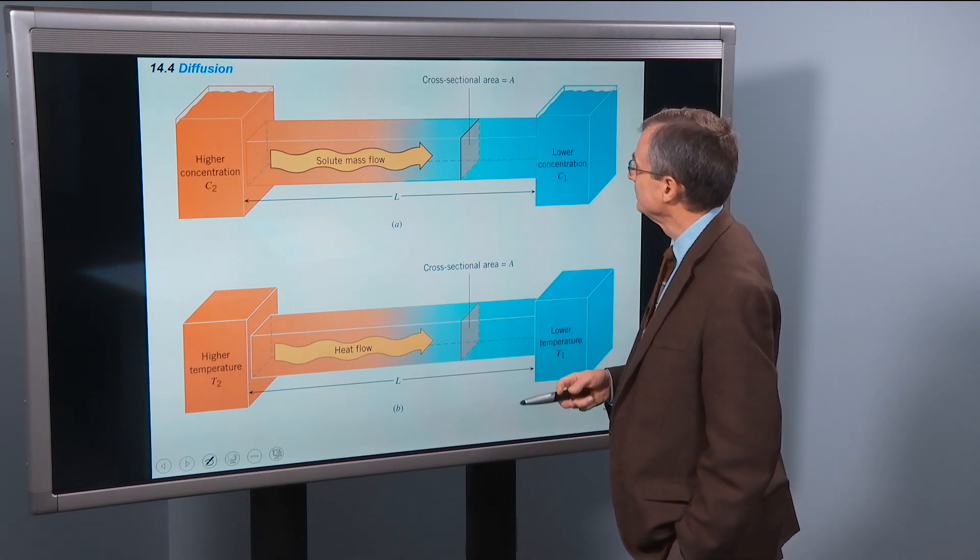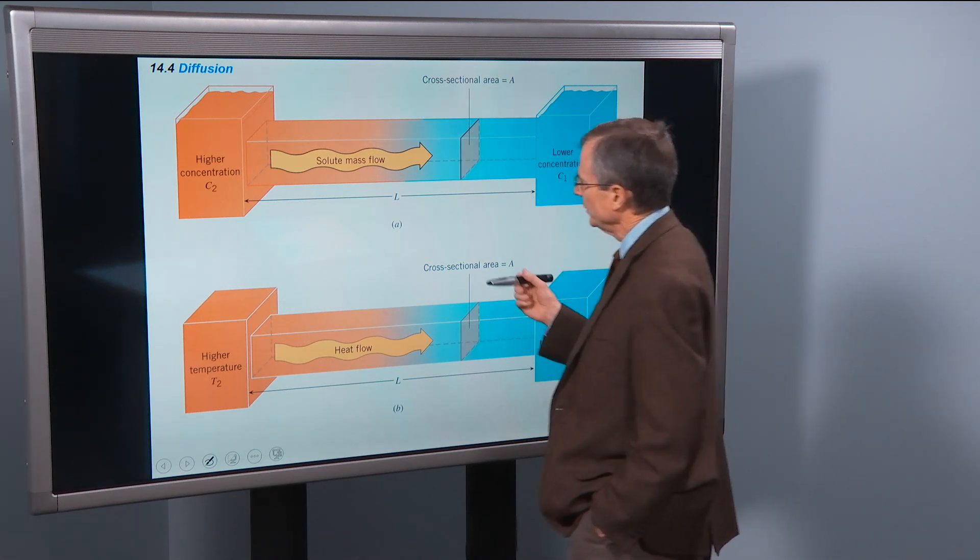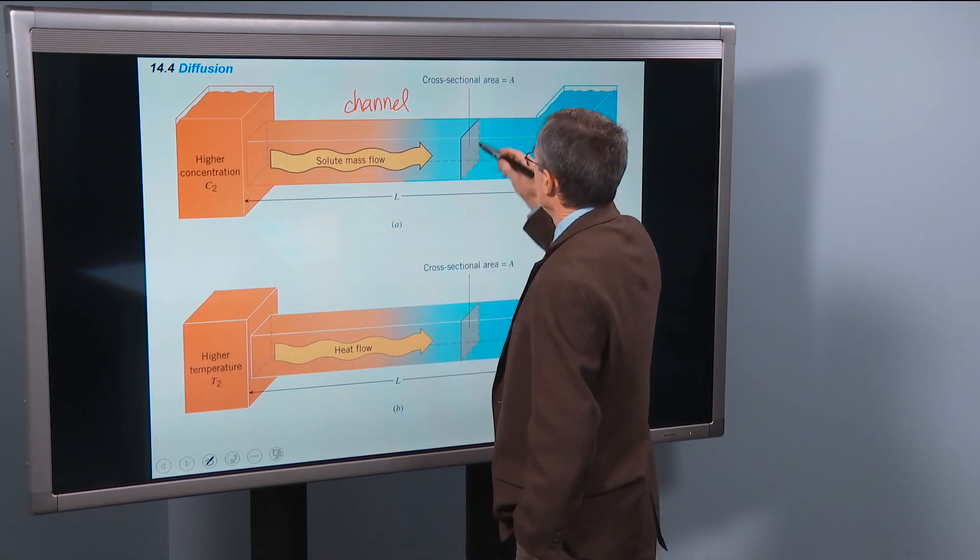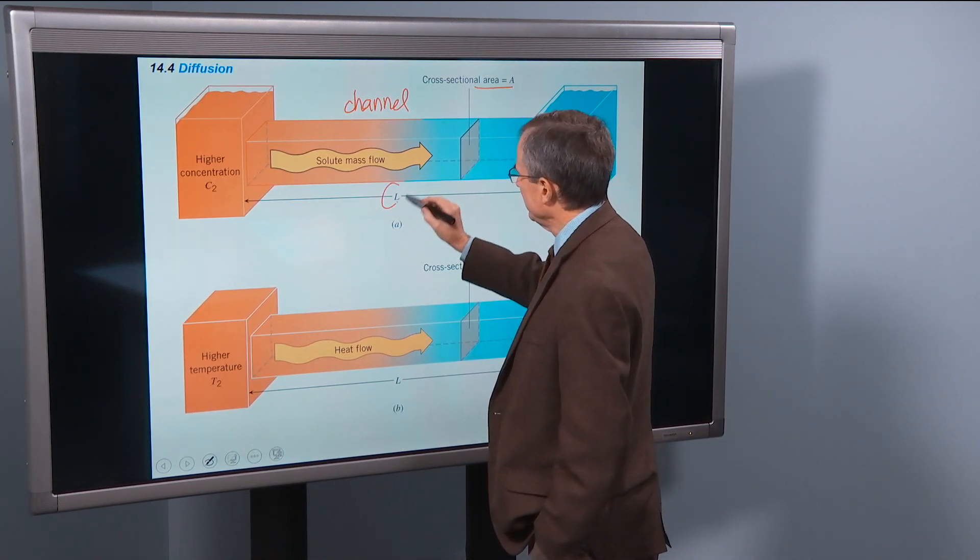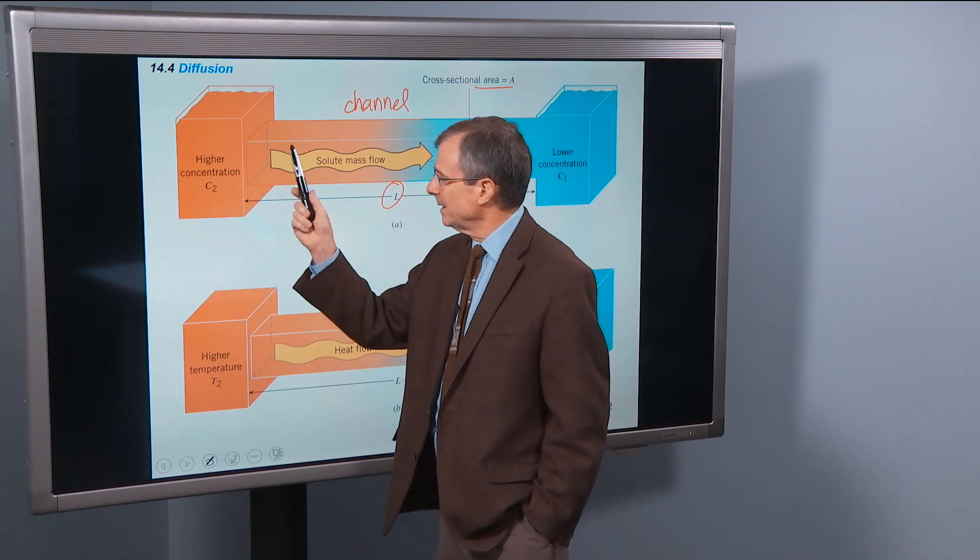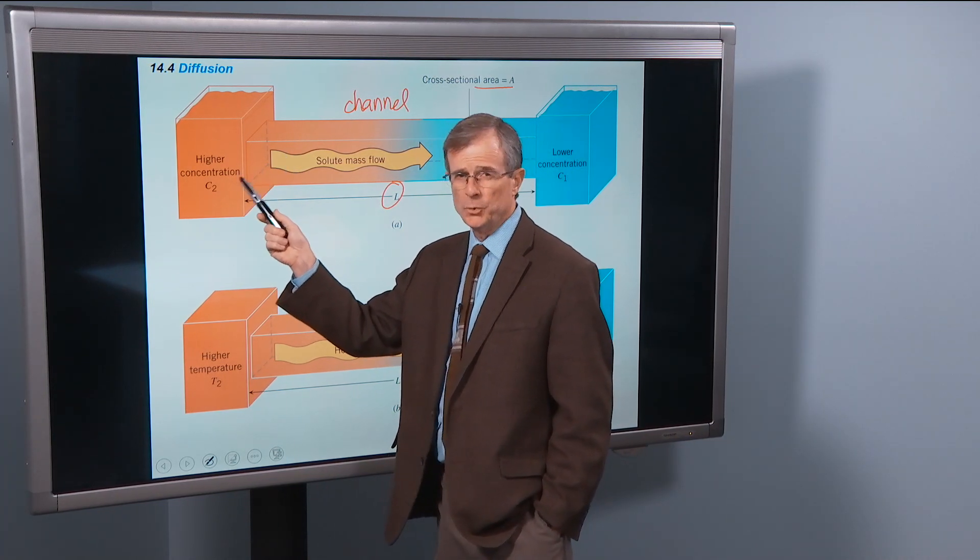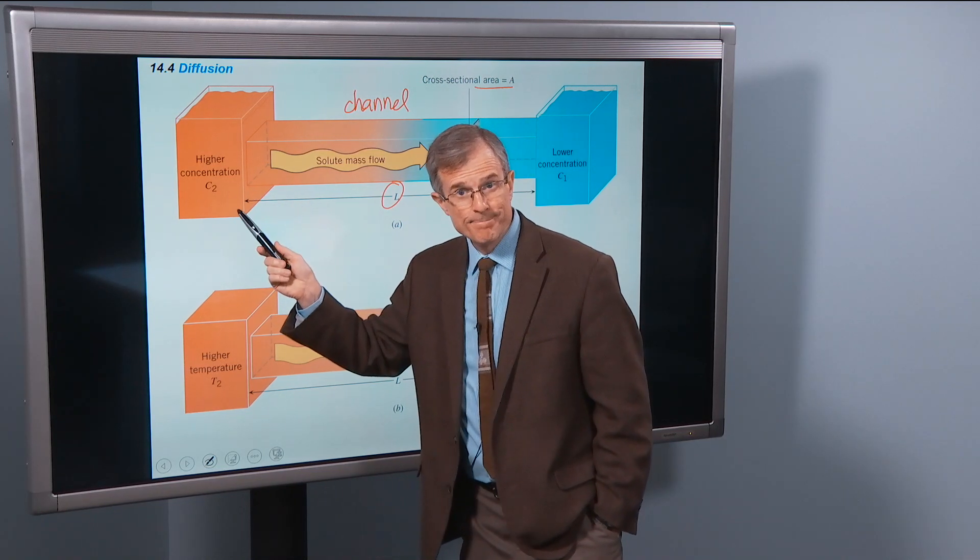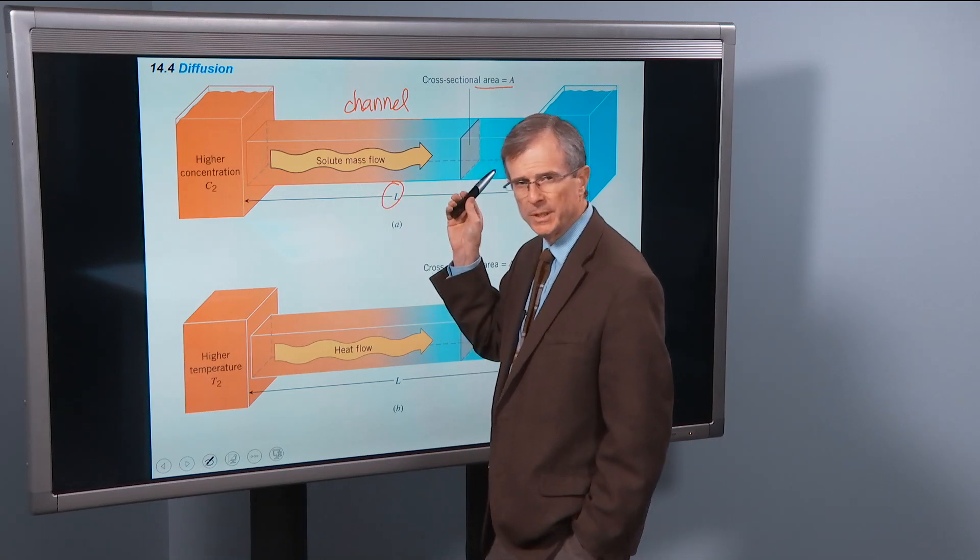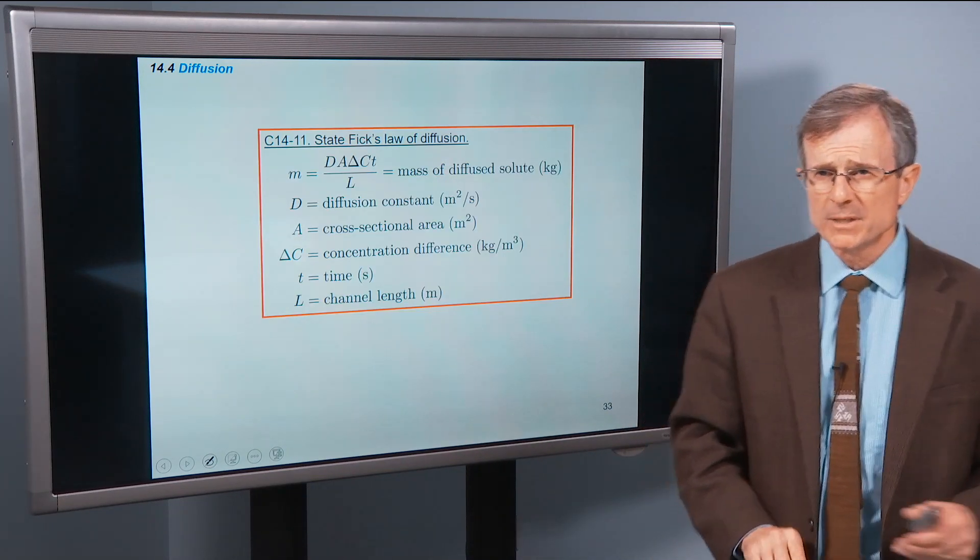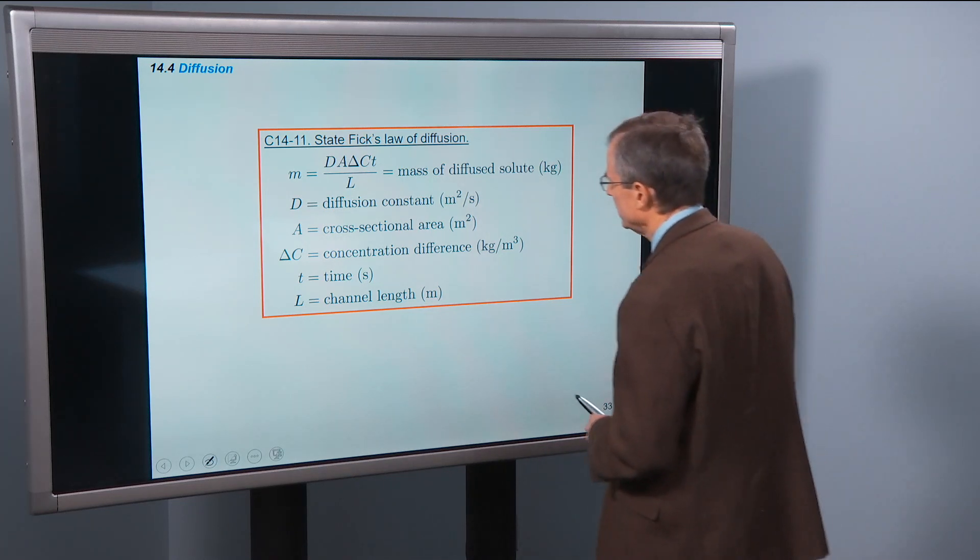So same kind of deal here, but what we're going to think about is a channel of cross-sectional area A, length L, through which some solute, like food dye, is going to slowly diffuse. And we're going to ask how long that takes. That is governed by something called Fick's Law of Diffusion.